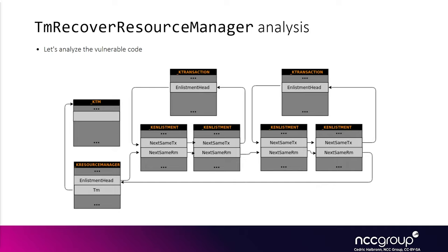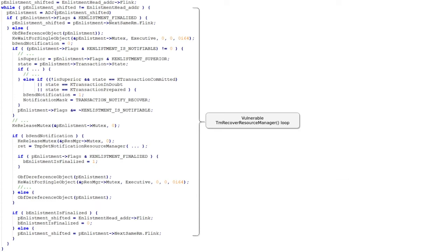What matters is that it is parsing the enlistments, and for each enlistment it is checking the flags — either acquiring the mutex when it needs to modify objects, or releasing the mutex when it wants to allow other code to modify them. Most importantly, the goal of the function is to notify the enlistments of the different states that have changed. The mutex locking and releasing is important for the bug, but it's just a detail in terms of functionality.